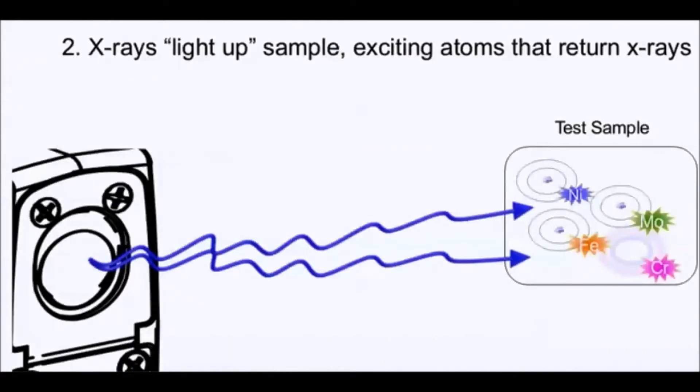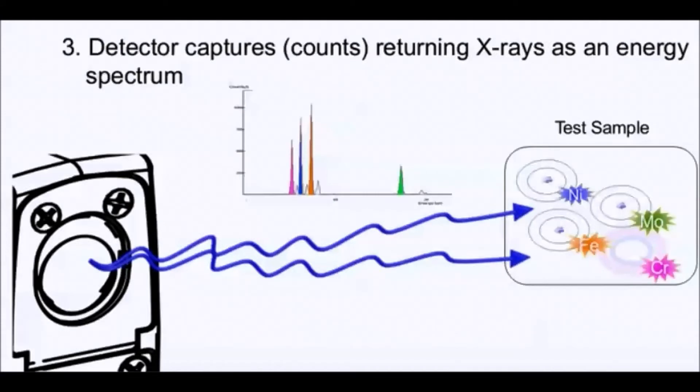The lighting up of the sample occurs when the X-ray energy temporarily knocks an electron out of its orbital, ionizing an atom. In the process of transitioning from a positive ion back to electrically neutral, the lit-up sample emits an X-ray energy that is specific for each element.